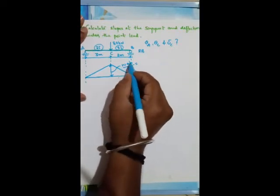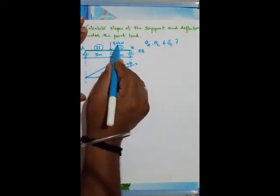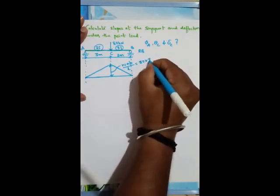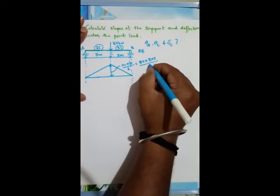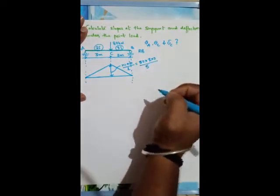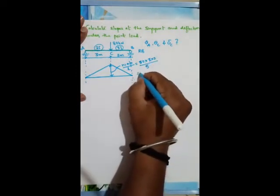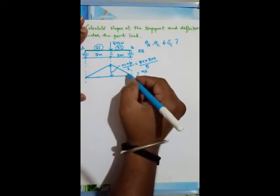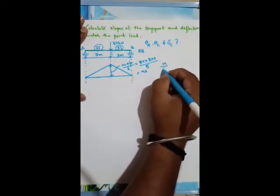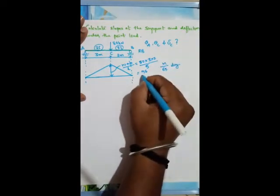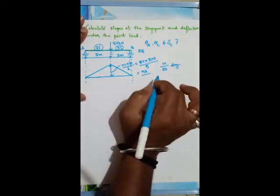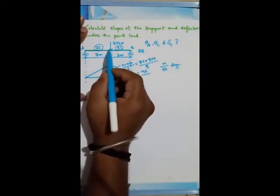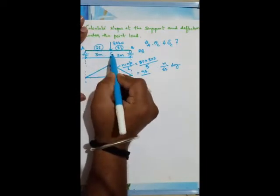This is standard loading acting at distance A and B — the concentrated load gives maximum bending moment W·A·B/L. So W is 80, A is 3 meters, B is 2 meters, divided by L = 5 meters. Simplifying this, you get 96. So we want the M/EI diagram, meaning the ordinate becomes 96/EI.